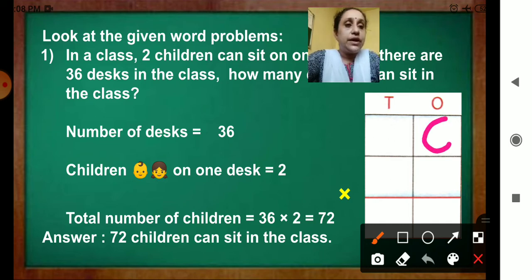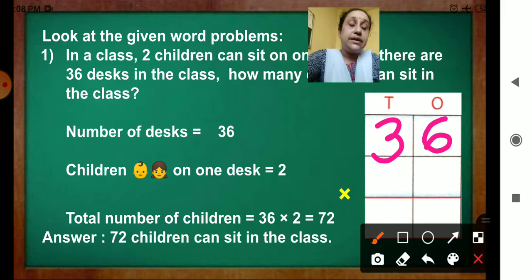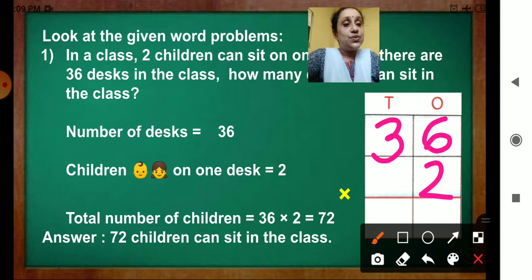How you will write? 6, then 3. Tens and ones column are there. Now, children on one desk equal to 2. Now, write 2 here. Now, we have to multiply these two numbers.